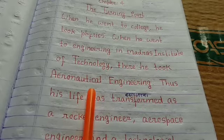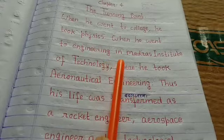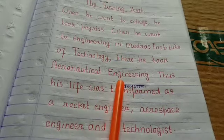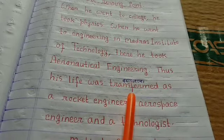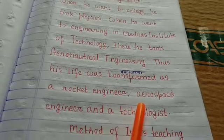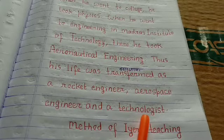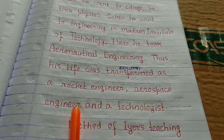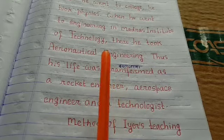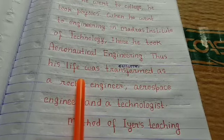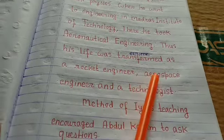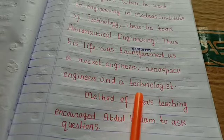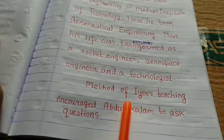In Madras Institute of Technology, Abdul Kalam ne aeronautical engineering liya — namak vishay chuna. Thus his life was transformed as a rocket engineer, aerospace engineer, and a technologist. Is prakar se Abdul Kalam ka jiwan rocket engineer, aerospace engineer aur ek technologist ke roop mein transformed ho gaya — badal gaya.